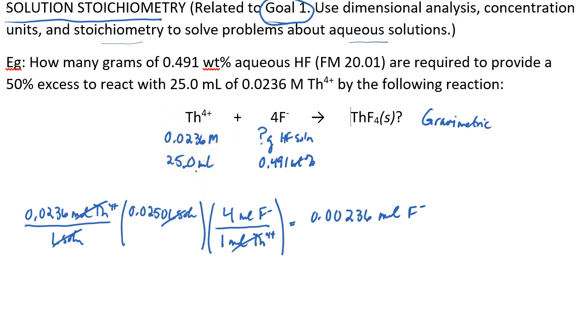But that's not what they're asking for. They're asking for this 50% excess, so they want the moles of fluoride needed to react with the moles of thorium plus 50% extra. So I'm going to add 50% extra, and half of 0.00236 is 0.00118 moles of fluoride.